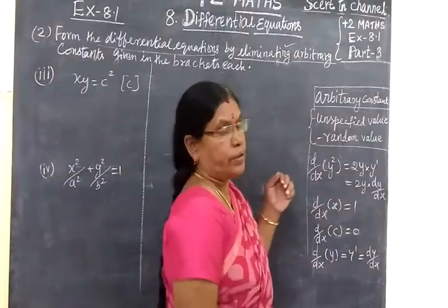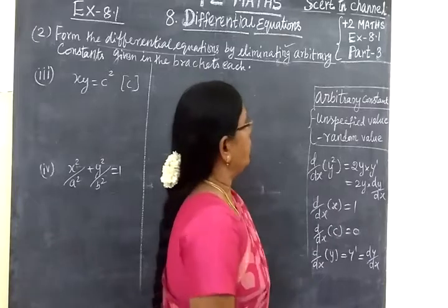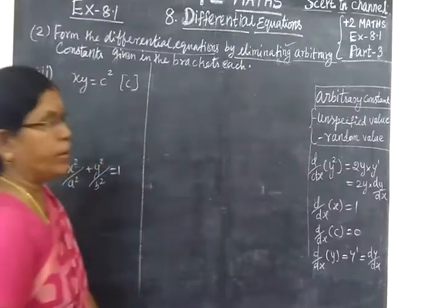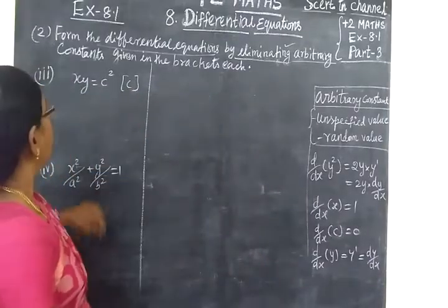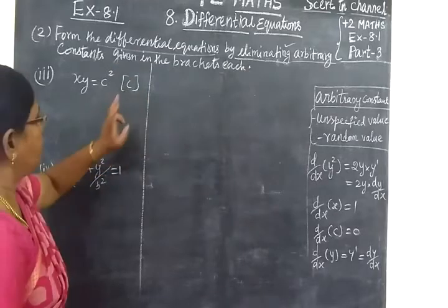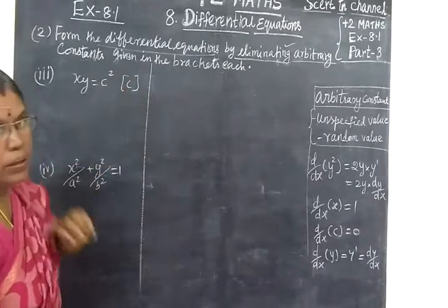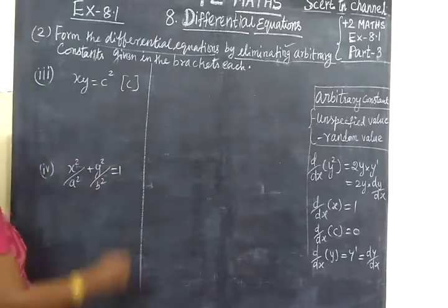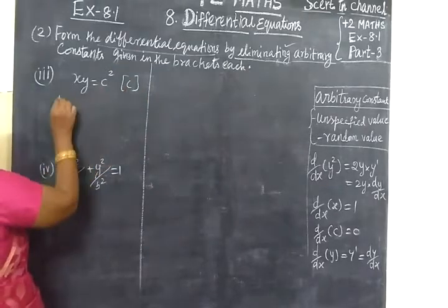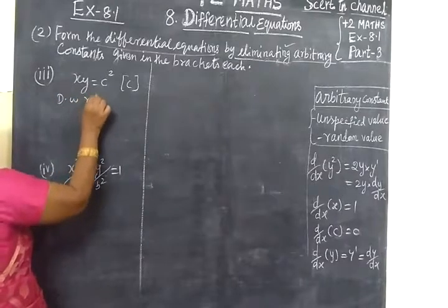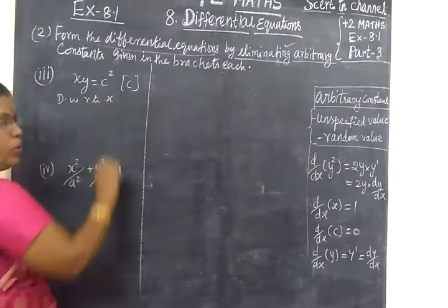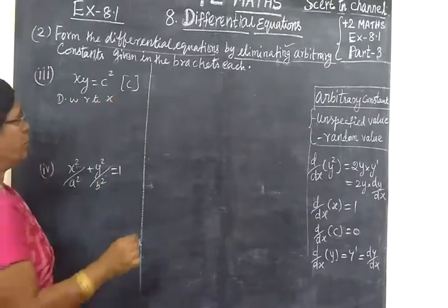Now we are going to see path 3. So in exercise 8.1, path 3, same differential equation — elimination method of the arbitrary constant C. Differentiate with respect to X one time only, since there is one arbitrary constant.